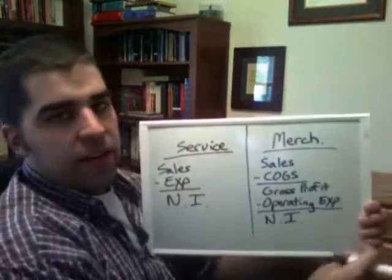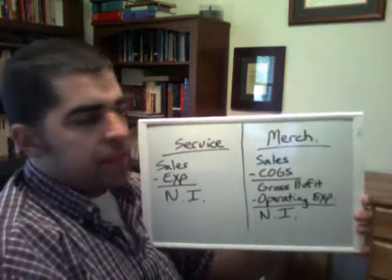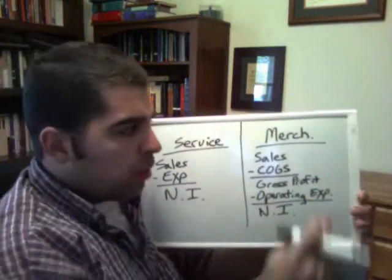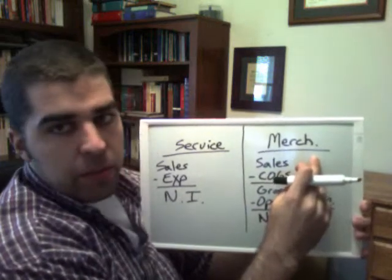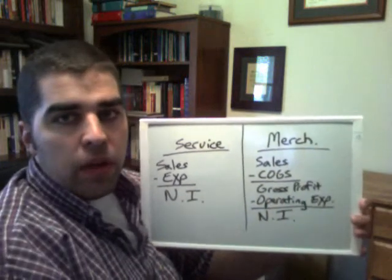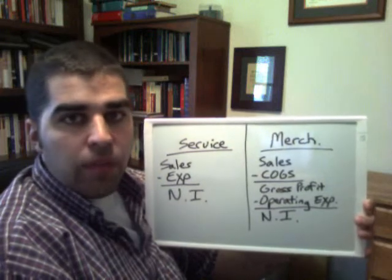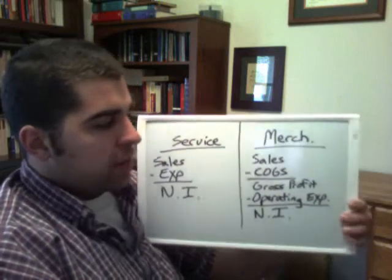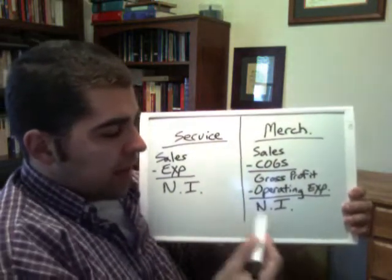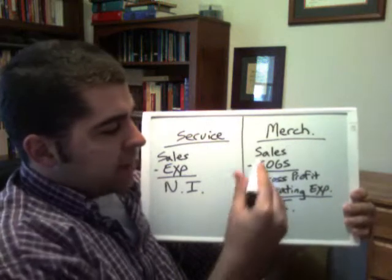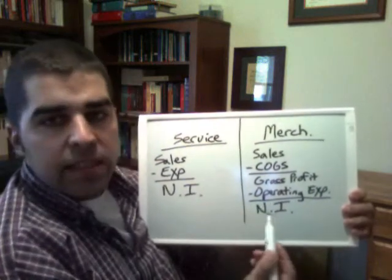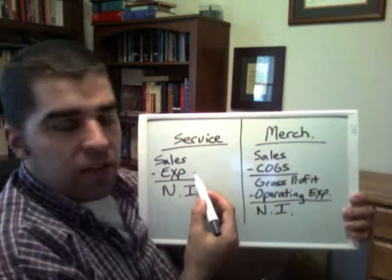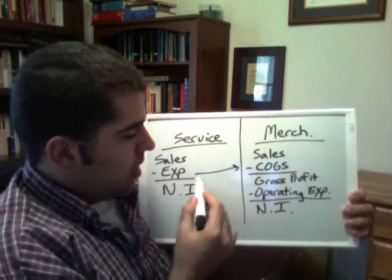I've written it out on the dry erase board here — the difference between the income statements of a service business versus a merchandising business. This is what we've done before. It gets a little more complicated when we talk about a merchandising business. A merchandiser is somebody who buys and sells goods, buying them from other people. They have inventory coming in and inventory going out. We're breaking out our expenses: what was previously just one line on the service piece, we're splitting into two parts.